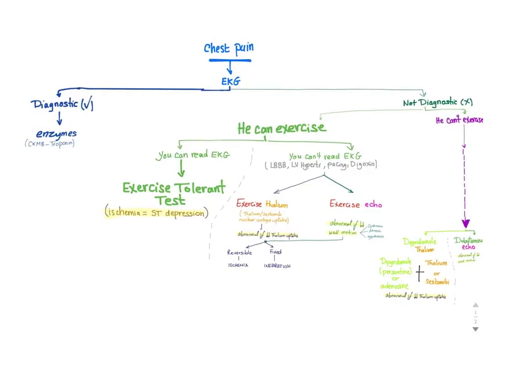So, chest pain: do an EKG. If it's diagnostic, I'm done—I'll just draw blood for enzymes. If the EKG is not diagnostic and the patient can exercise and I can read the EKG, I'll do exercise tolerance test. If the EKG is not diagnostic, the patient can exercise, but I cannot read the EKG, I'll use exercise thallium or exercise echo. If the EKG is not diagnostic and the patient cannot exercise, I'll do dipyridamole thallium or dobutamine echo.